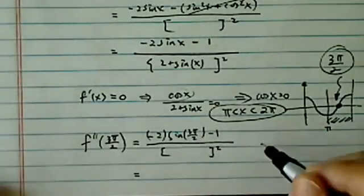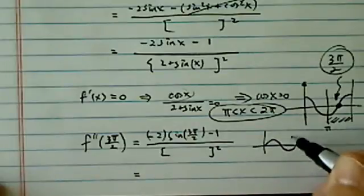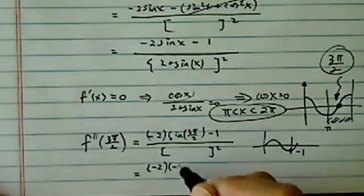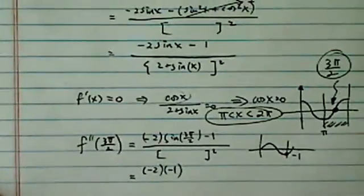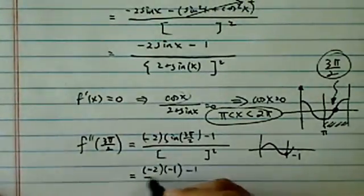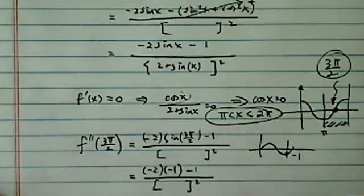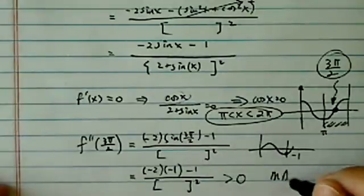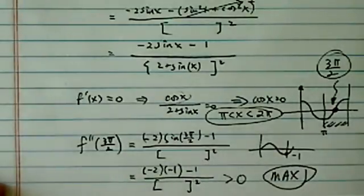Now sine of 3 pi over 2, the sine curve looks like this. So this is minus 1 here. So for our purpose, it's minus 2 times minus 1 minus 1 divided by the whole thing squared. So this is 2 minus 1, which is actually positive. So this actually gives us the max.